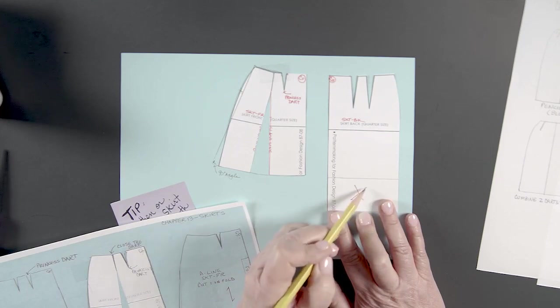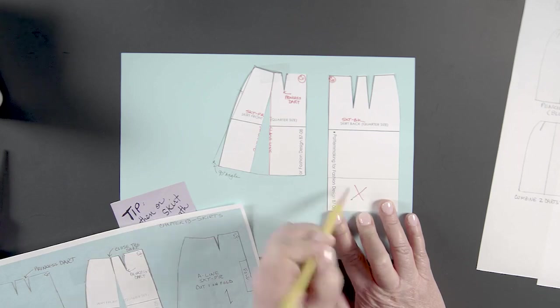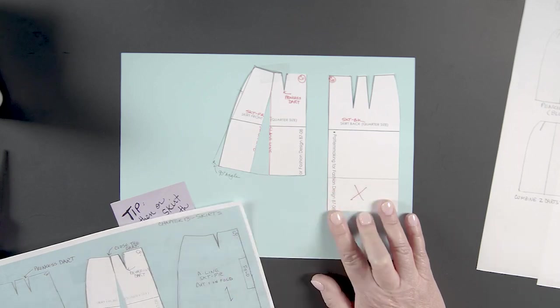Of course, our side seams have to match. So whatever you shorten this to, you need to do the same here. So you would cut that off.